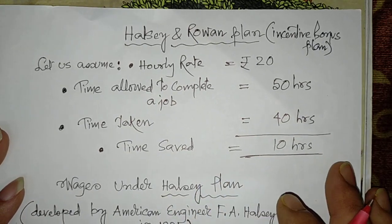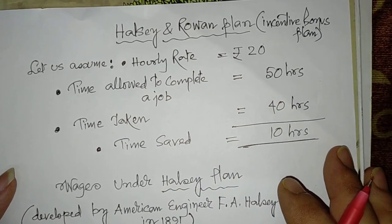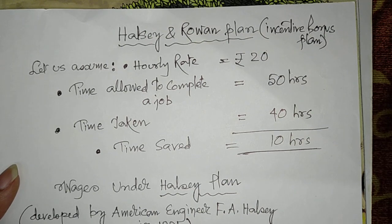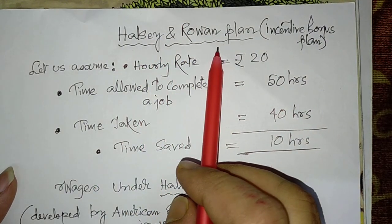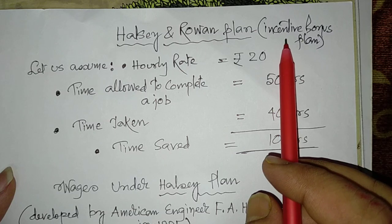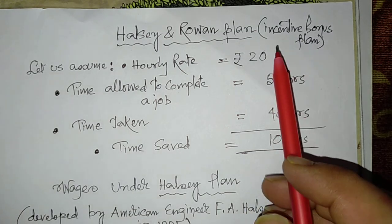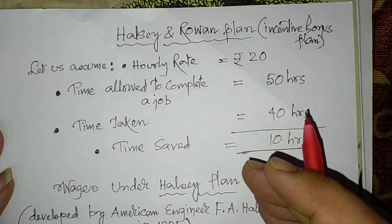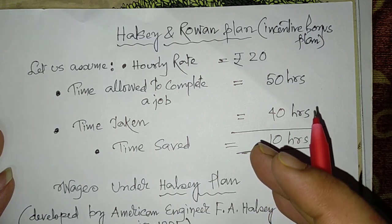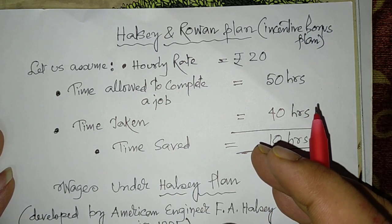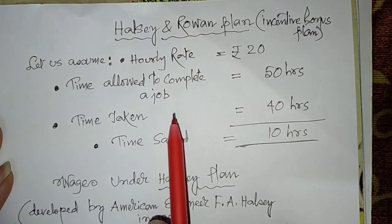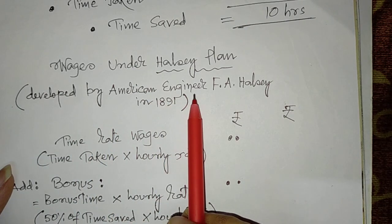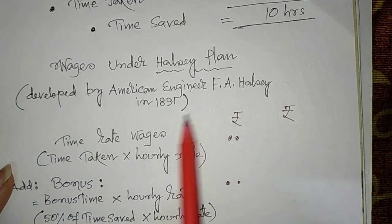Today I am introducing a new method of overhead payment, which is very important: the Halsey and Rowan plans. Halsey plan is a separate plan and Rowan plan is a separate plan. They are basically incentive bonus plans — if a worker is efficient enough, he will get an extra bonus on and above his time rate wages. The Halsey plan was introduced and developed by American engineer F.A. Halsey in 1891.